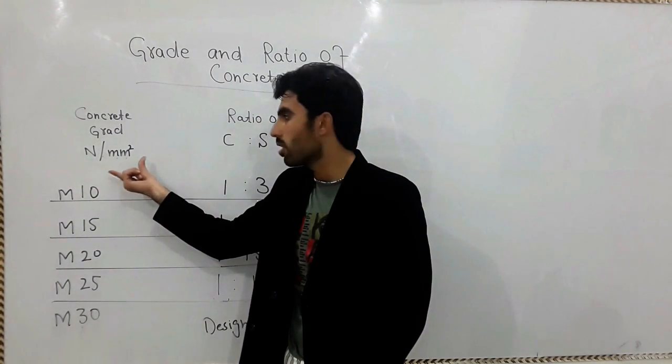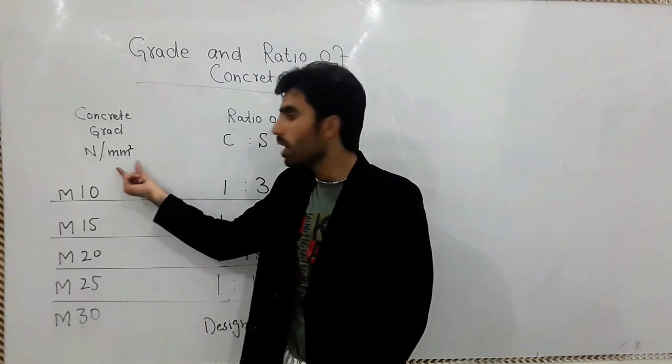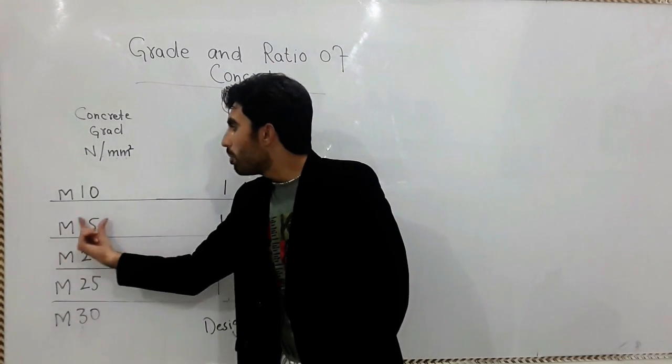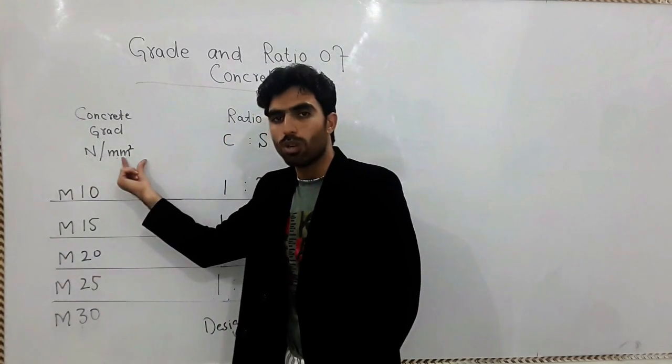Okay, M10 - 10 Newton per mm square, M15 - 15 Newton per mm square, M20 - 20 Newton per mm square.